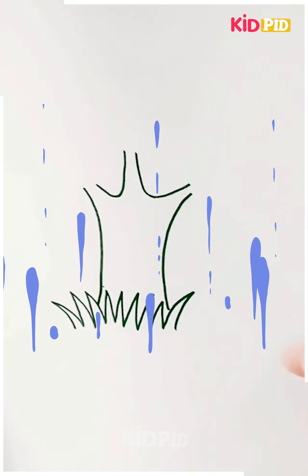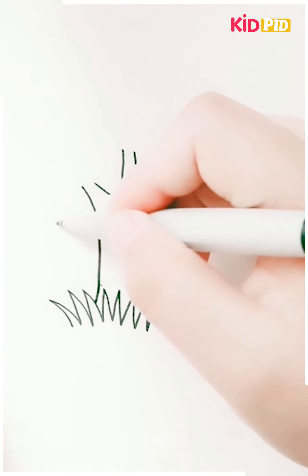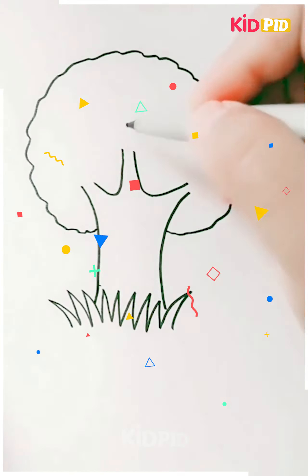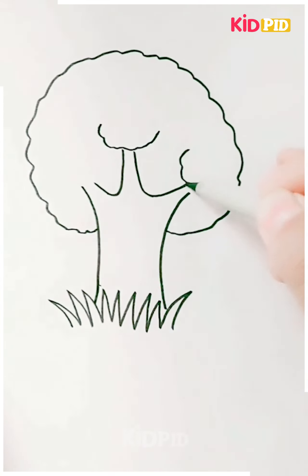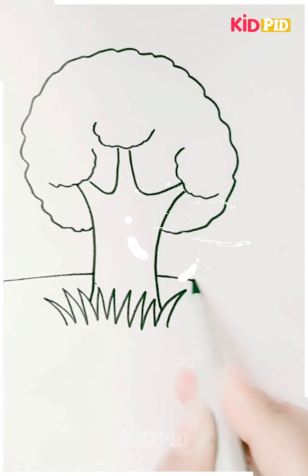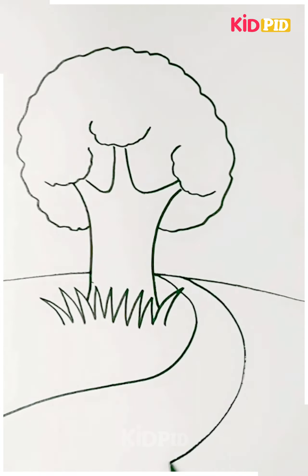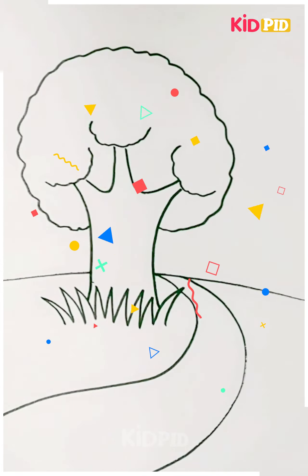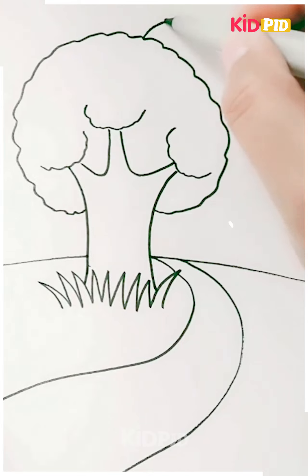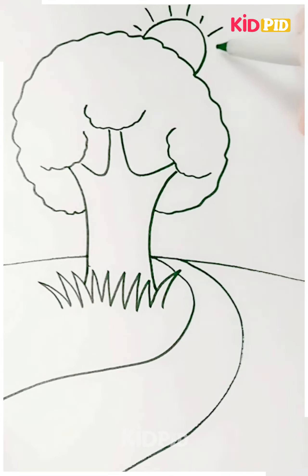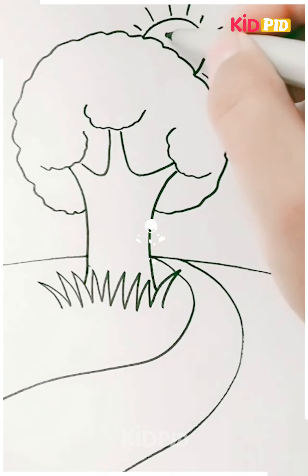I'm drawing a tree and grasses. Drawing the branches of a big tree and then inside one more branch — dividing it by half. The tree is very beautiful, with water flowing and a sun rising near the tree.